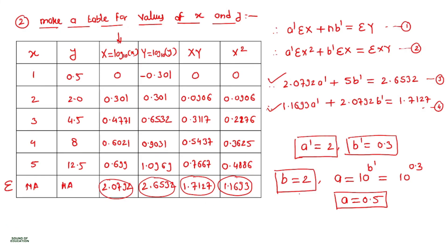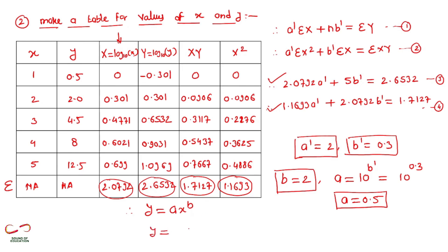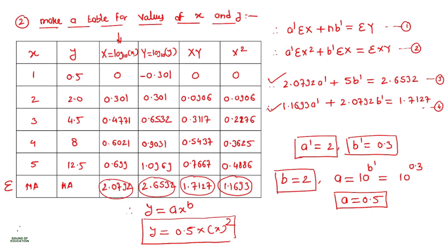Now we have the values of A and B. Putting them into the given equation y = ax^b, the final answer is y = 0.5 · x².